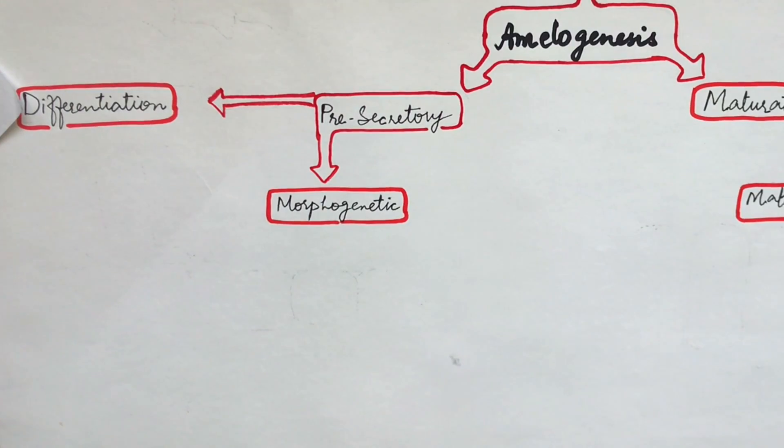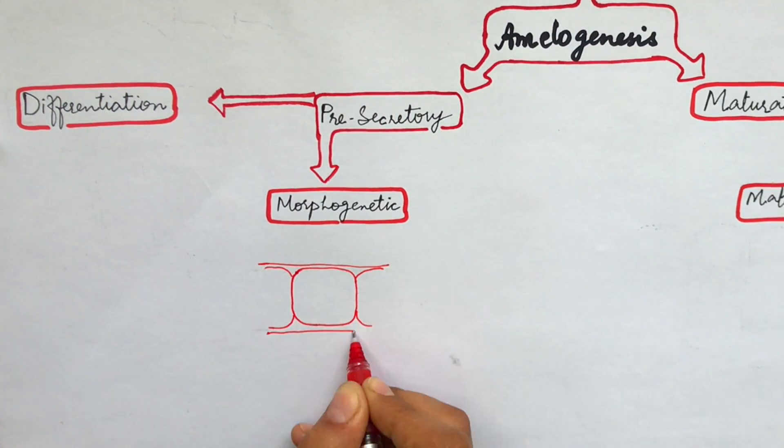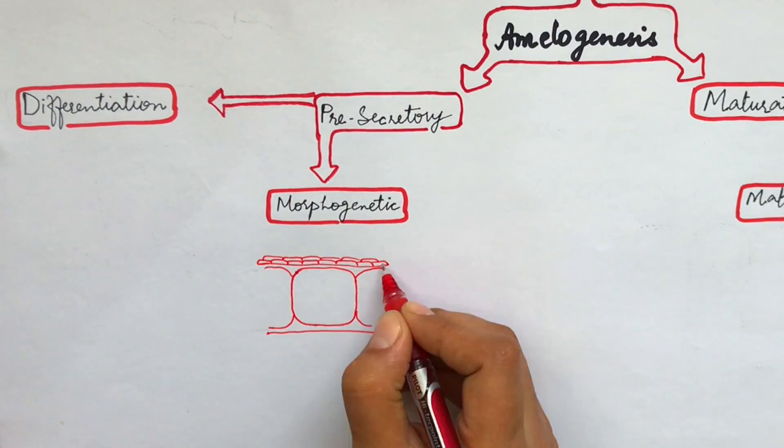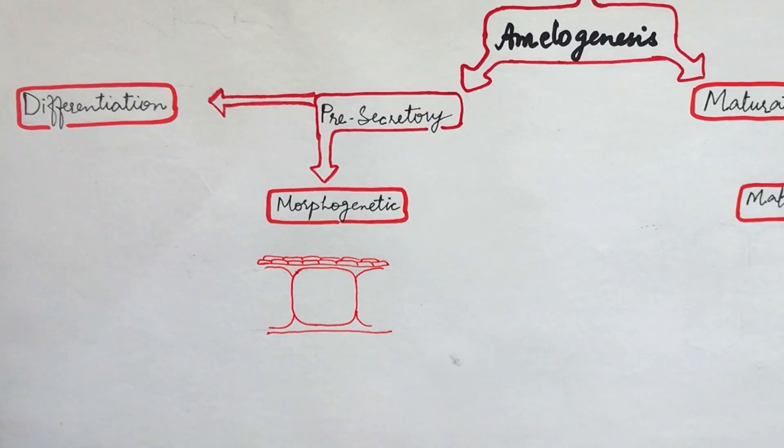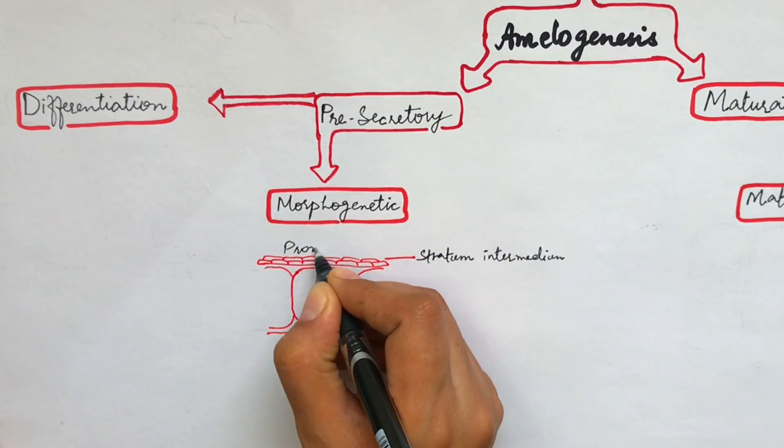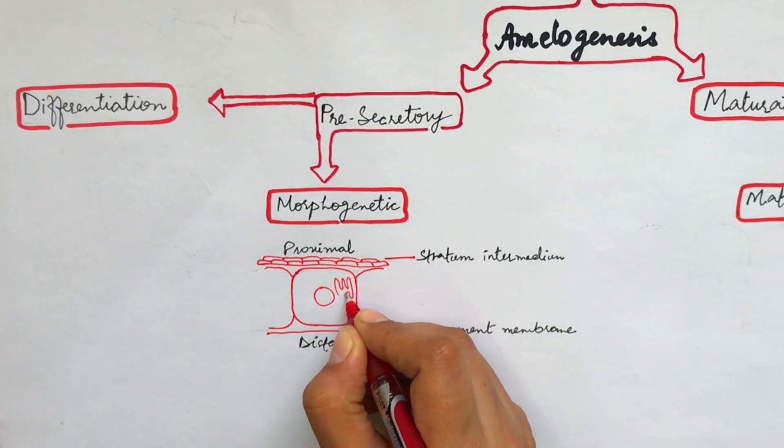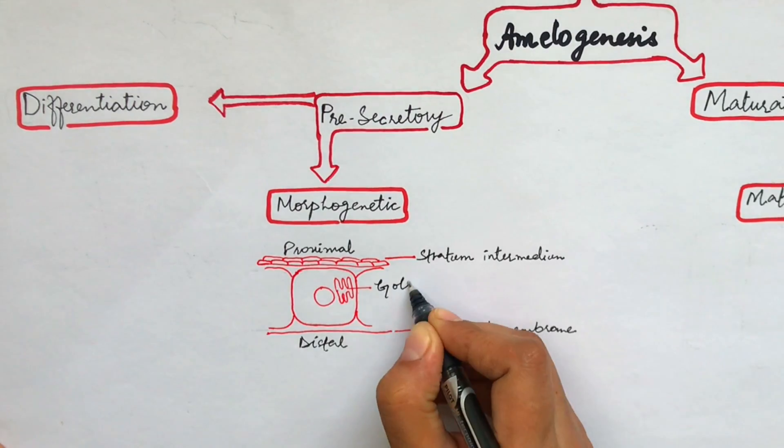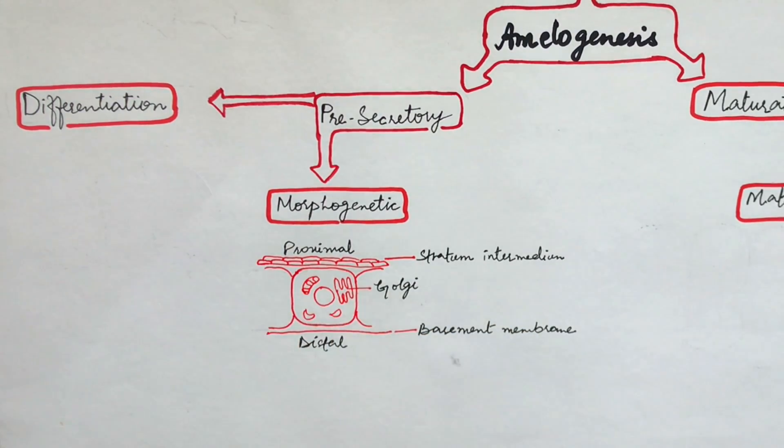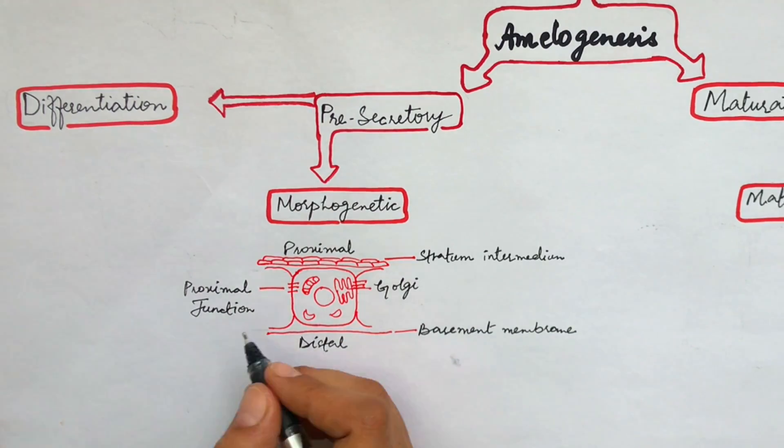In the morphogenetic phase, the inner enamel epithelium assumes the shape of a crown. The cells of the inner enamel epithelium become cuboidal or short columnar in shape. The part of the cell facing the stratum intermedium is called its proximal portion while the part of the cell facing its basement membrane is its distal portion. The nucleus of the cell is centrally placed. Mitochondria and other cellular organelles are scattered throughout the cell. A junctional complex is present at the proximal portion of the cells and it's called proximal junctional complex.